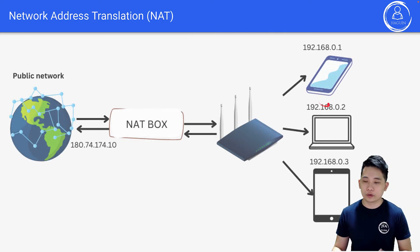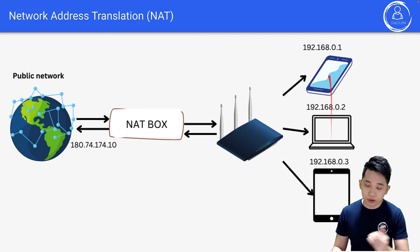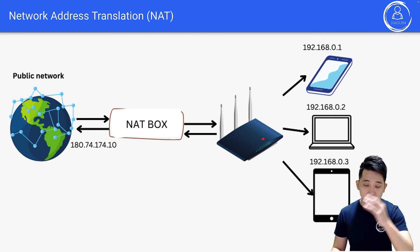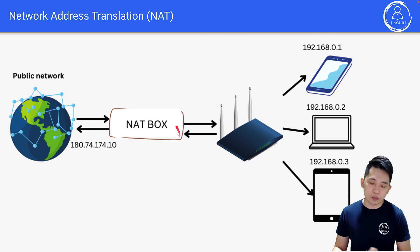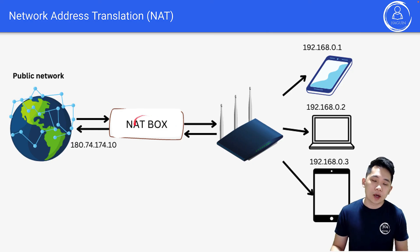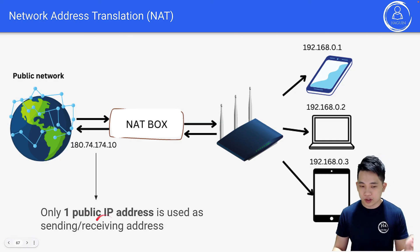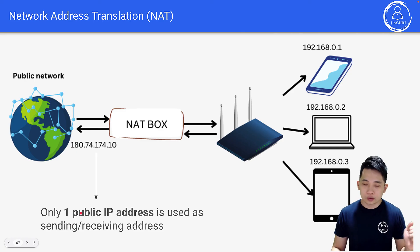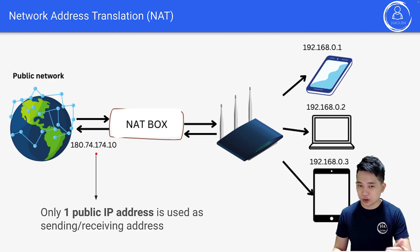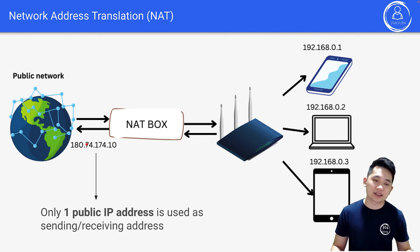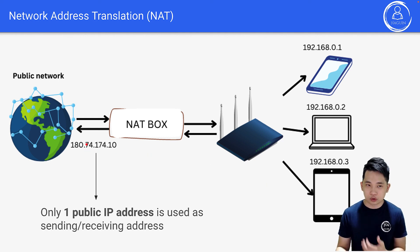Network address translation, NAT, works like this: multiple devices with different private IP addresses connect to a router for internet access. A NAT box — either separate or embedded in the router — allows all these devices to access the internet using a single public IP address. From the outside world, it appears as if there is only one device, but in fact multiple devices are sharing that single IP to access the internet.